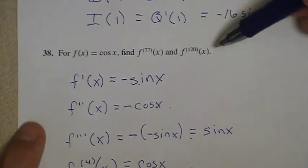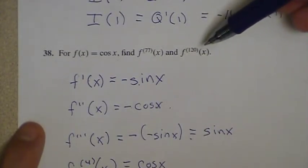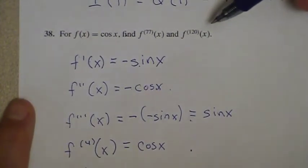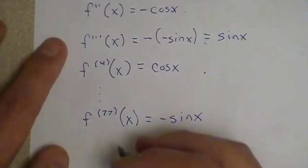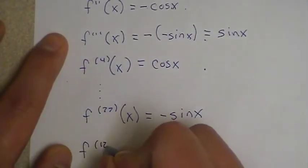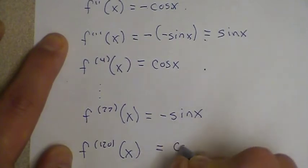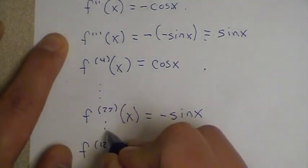Now 120, we're a little bit luckier with because 120 is divisible by 4. And since 120 is divisible by 4, our derivative is going to be just cosine of x. So our 120th derivative is going to be equal to cosine of x.